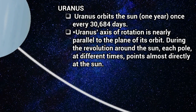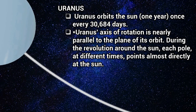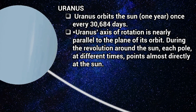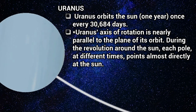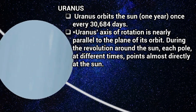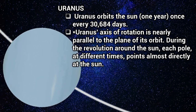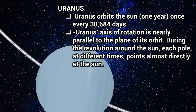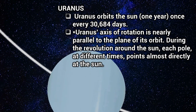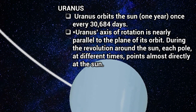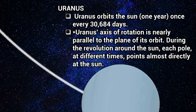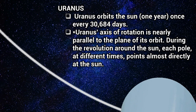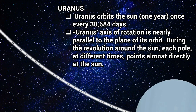Uranus orbits the Sun once every 3,684 days. Uranus's axis of rotation is nearly parallel to the plane of its orbit. During the revolution around the Sun, each pole, at different times, points almost directly at the Sun.